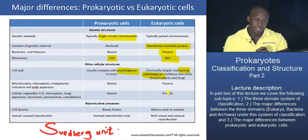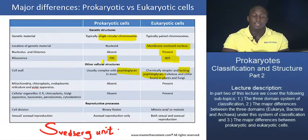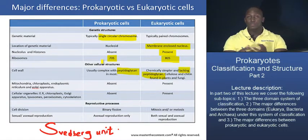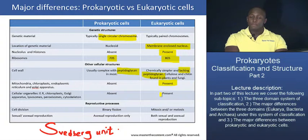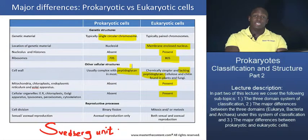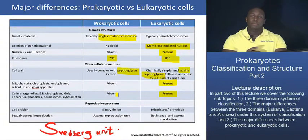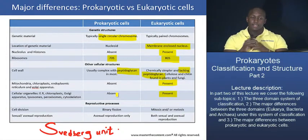What about key organelles? Mitochondria, chloroplasts, endoplasmic reticulum, Golgi apparatus, lysosomes, peroxisomes, and cytoskeletal elements are all organelles present in eukaryotic cells but absent in prokaryotic cells. That's a huge difference. If given an electron micrograph of a prokaryotic and a eukaryotic cell without labels, you should be able to identify them based on the fact that you will not see any membrane-bound organelles in the prokaryotic cell.